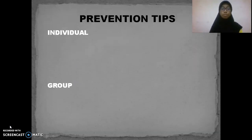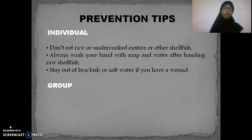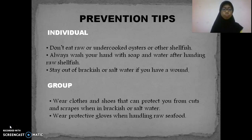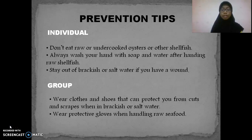Prevention tips. There are two types: individual and cooking-related. For individual prevention: do not eat raw or undercooked oysters or other shellfish; always wash your hands with soap and water after handling raw shellfish; and stay out of brackish or salt water if you have a wound. For cooking-related prevention: wear clothes and shoes that protect you from cuts and scrapes when in brackish or salt water, and wear protective gloves when handling raw seafood.